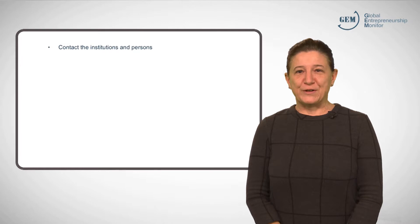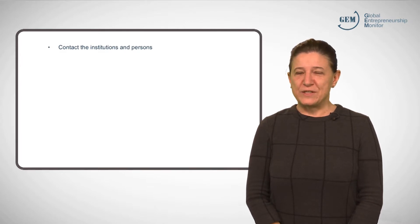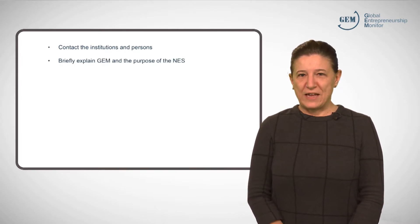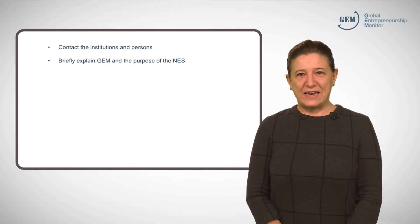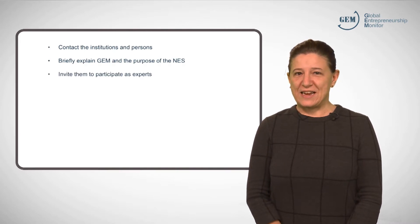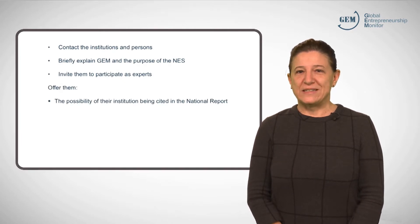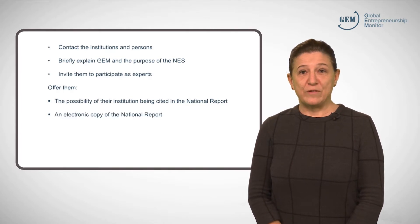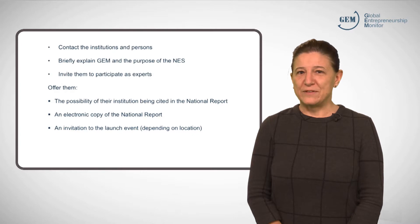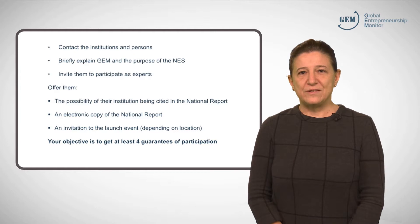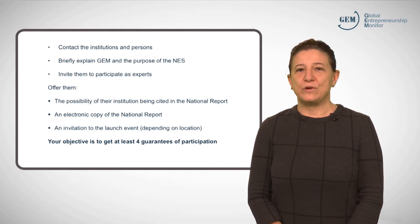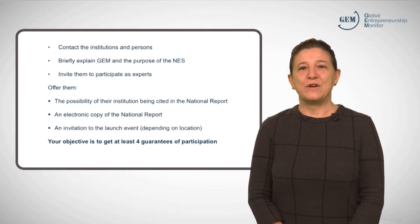When you have made your list, make contact with these institutions, firms or persons. Briefly explain GEM and the purpose of the NES and invite them to participate as an expert. You might propose that their institution be cited in the national report, send them an electronic copy of the report, and also invite them to the lunch event if they are local enough to attend. Your objective is to get at least four experts to agree to participate. Continue contacting institutions and people until you have enough.